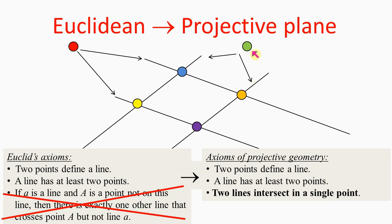As parallel lines meet at infinity, these extra points — also called ideal points — are at infinity. We add a new ideal point to every line to allow even parallel lines to meet. We cannot solve the problem with a single ideal point for all lines because we must assign a different ideal point to each set of parallel lines. If two non-parallel sets of lines shared the same ideal point, two different lines would meet at two different points — a contradiction, since two points unambiguously define a line.